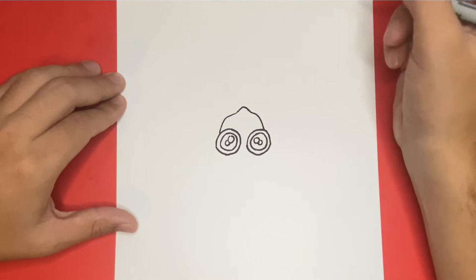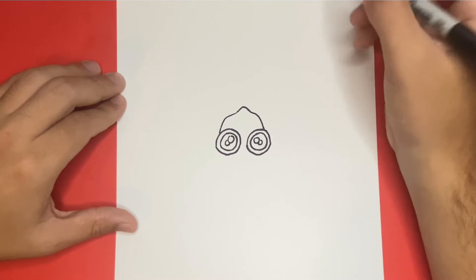Now let's go ahead and draw a long curved line that will connect from the bottom left eye all the way over to the right. This will help us make the bottom outline of the face.